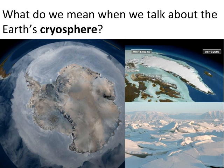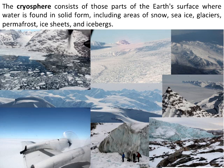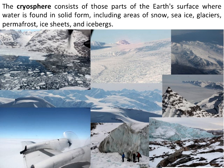Something you might not be familiar with is a term called the cryosphere — that is the frozen portion of the Earth. Some of you may know the atmosphere as the gaseous layer around the Earth, and from Earth science you may know the lithosphere, which is the solid surface. The cryosphere is that frozen part of the Earth. It consists of snow, sea ice, glaciers, permafrost, ice sheets, and icebergs. This slide shows glimpses of the cryosphere up here in Greenland — all shots taken within the past week on one of the flights I've been on.